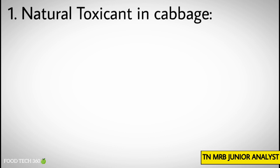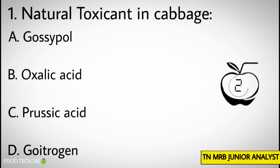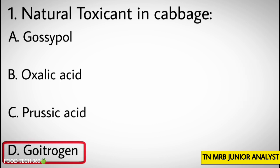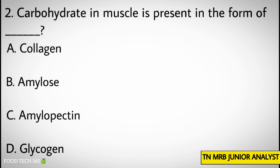Question number one: Natural toxin in cabbage. Options: A) Gossypol, B) Oxalic acid, C) Prussic acid, D) Goitrogen. Correct answer: D) Goitrogen. Question number two: Carbohydrate in muscle is present in the form of dash. Options: A) Collagen, B) Amylose, C)...